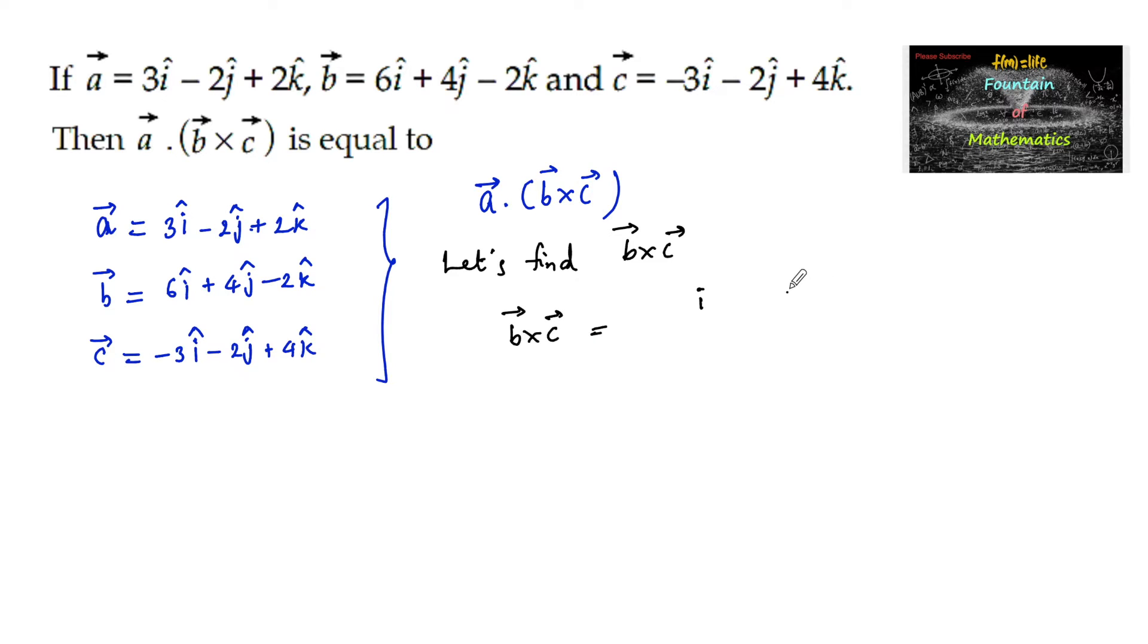Setting up the determinant: i, j, k. The scalar components of vector b are 6, 4, minus 2, and scalar components of vector c are minus 3, minus 2, and plus 4.